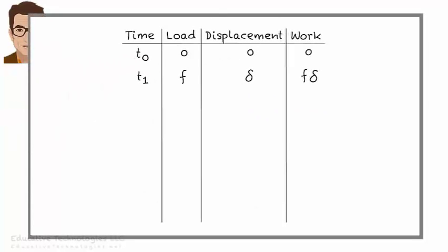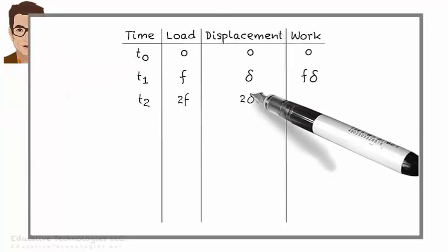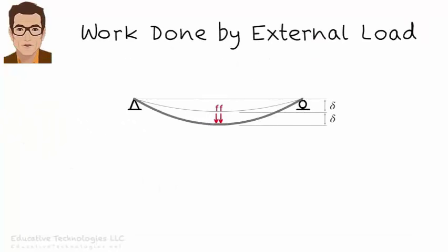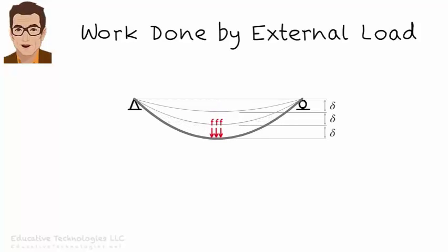Let's update our table. At t2, total load is 2F, total displacement is 2 delta, and the incremental work done is 2F delta. Now we're at the third step. We add another F to the beam. This causes the beam to displace an additional delta. So what is the incremental work done at t3? The incremental displacement is delta, and 3F's travel through it. So the work increment at this step is 3F delta.